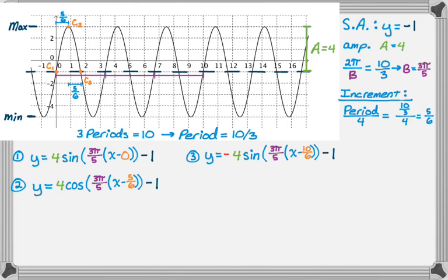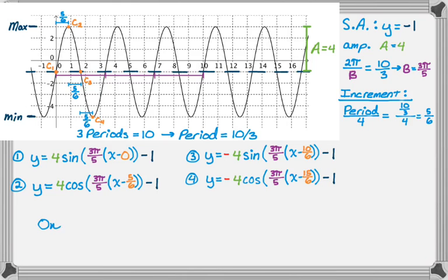Moving one more increment of 5/6: from 10/6 I get to 15/6. I'm at a negative cosine. As a check, if I move one more increment I'd go from 15/6 to 20/6, which reduces to 10/3 — and 10/3 is the period. So it worked: we went all the way through the pattern and covered exactly one full period.